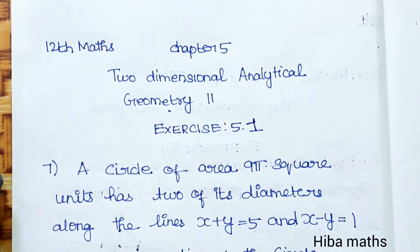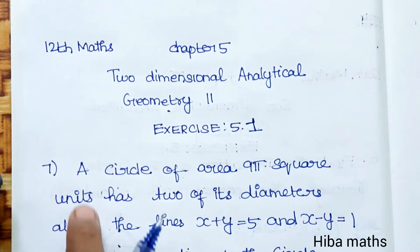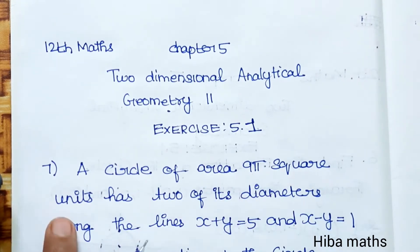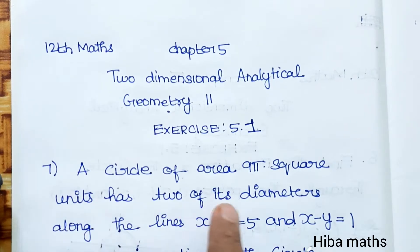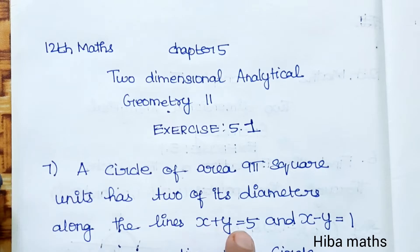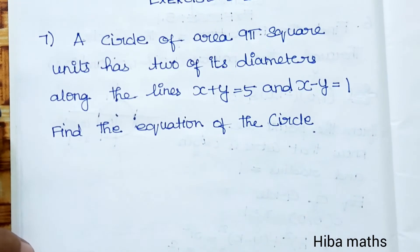Hello students, welcome to Hiba Maths. 12th Standard Maths, Chapter 5: Two-dimensional Analytical Geometry II, Exercise 5.1. A circle of area 9π square units has two of its diameters along the lines x+y=5 and x-y=1. Find the equation of the circle.